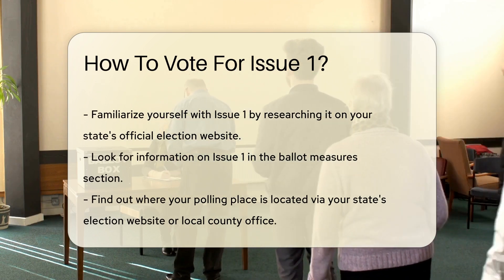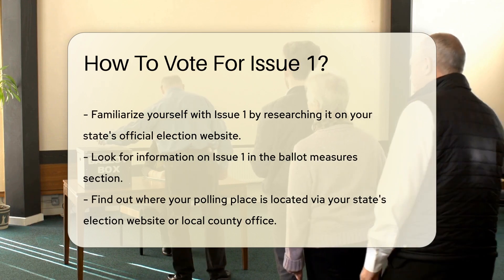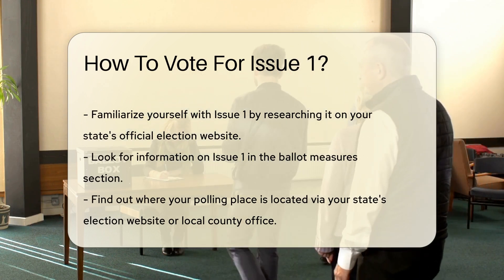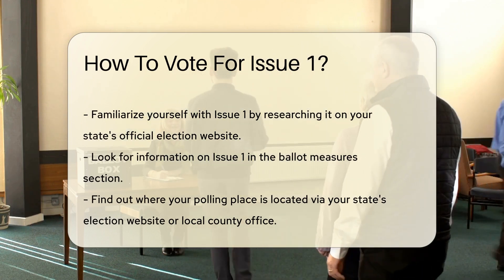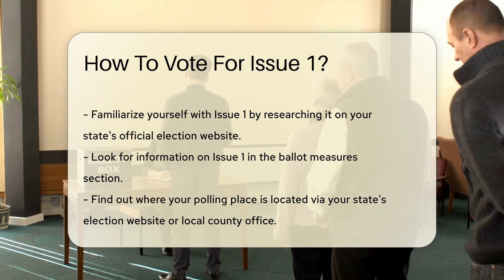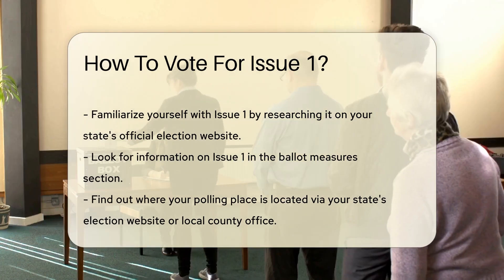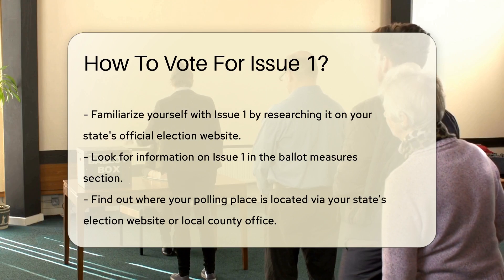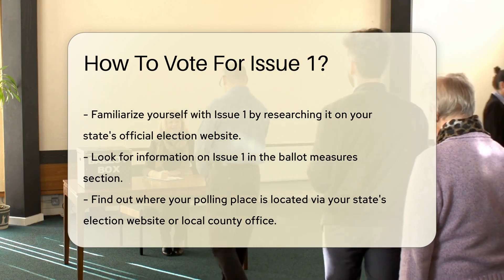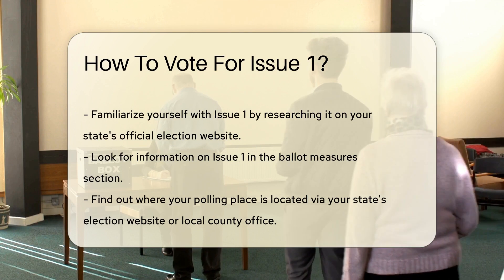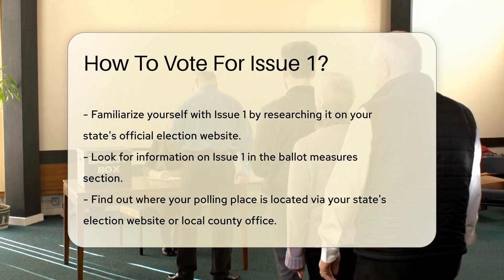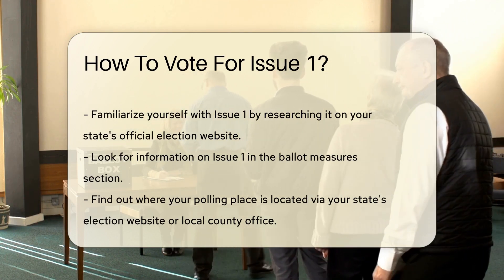Then find out where your polling place is located. This information is available on your state's election website or through your local county office. Polling places are typically assigned based on your residential address. Determine the voting methods available in your state. Options may include in-person voting on election day, early voting, or absentee voting by mail. Each method has different procedures and deadlines.